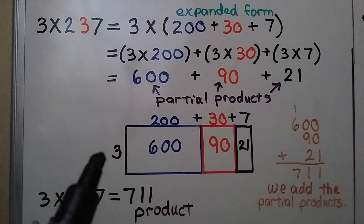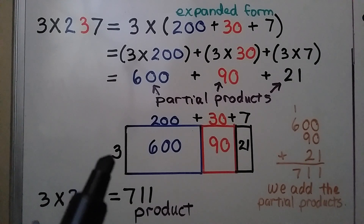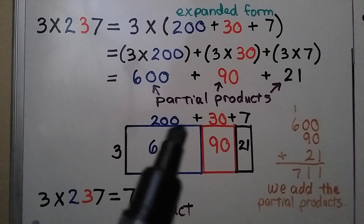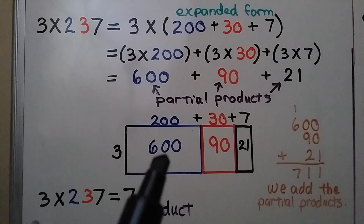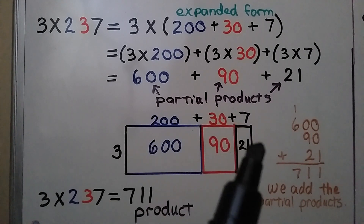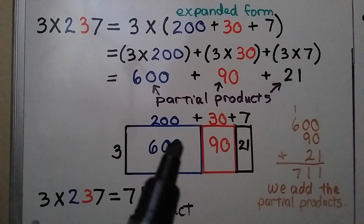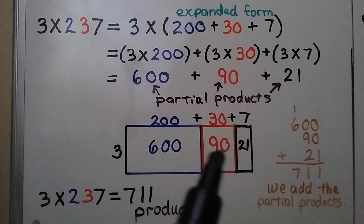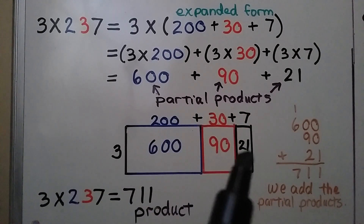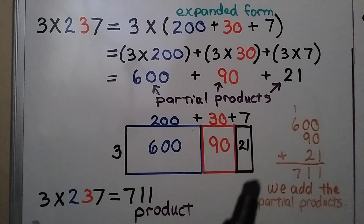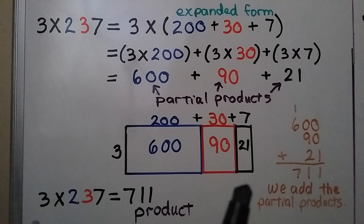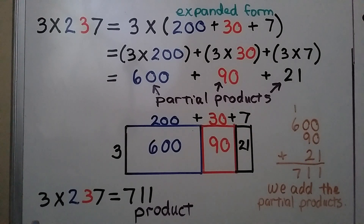3 times 237 is equal to 711. We can look at it in a model by breaking 237 into 200, 30, and 7. 3 times 200 is 600, 3 times 30 is 90, and 3 times 7 is 21. We add the partial products and get 711 — that's our product.